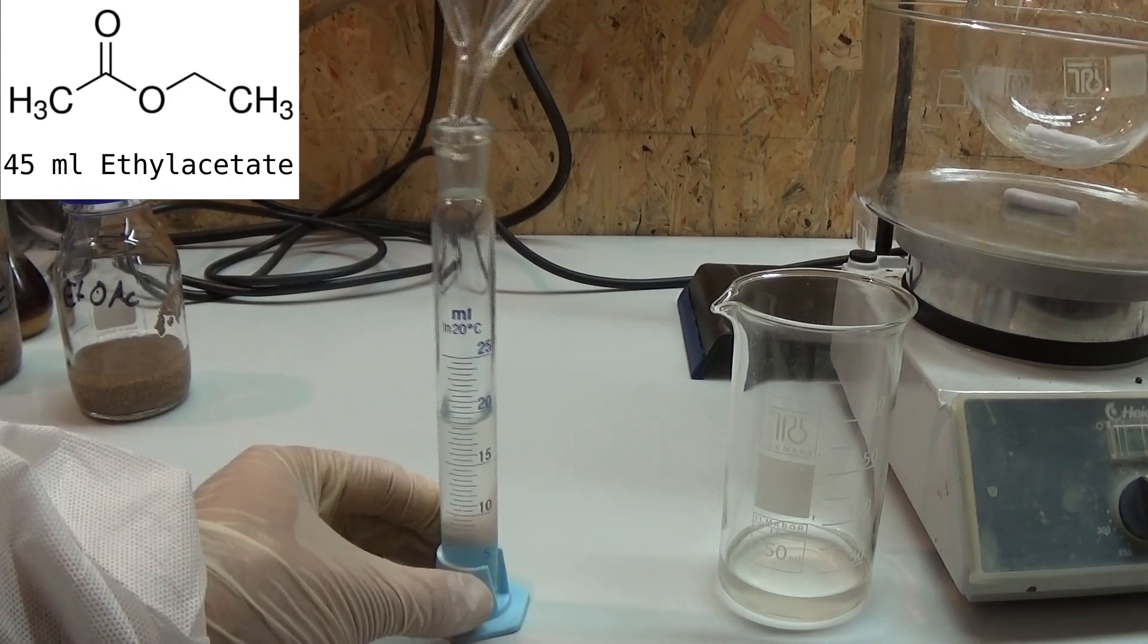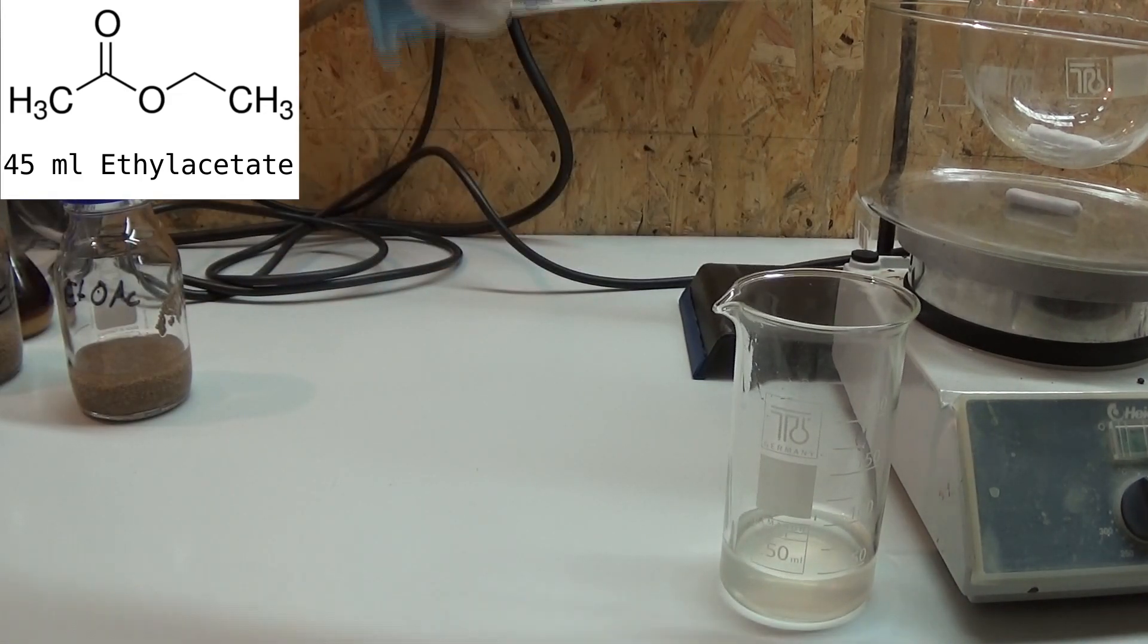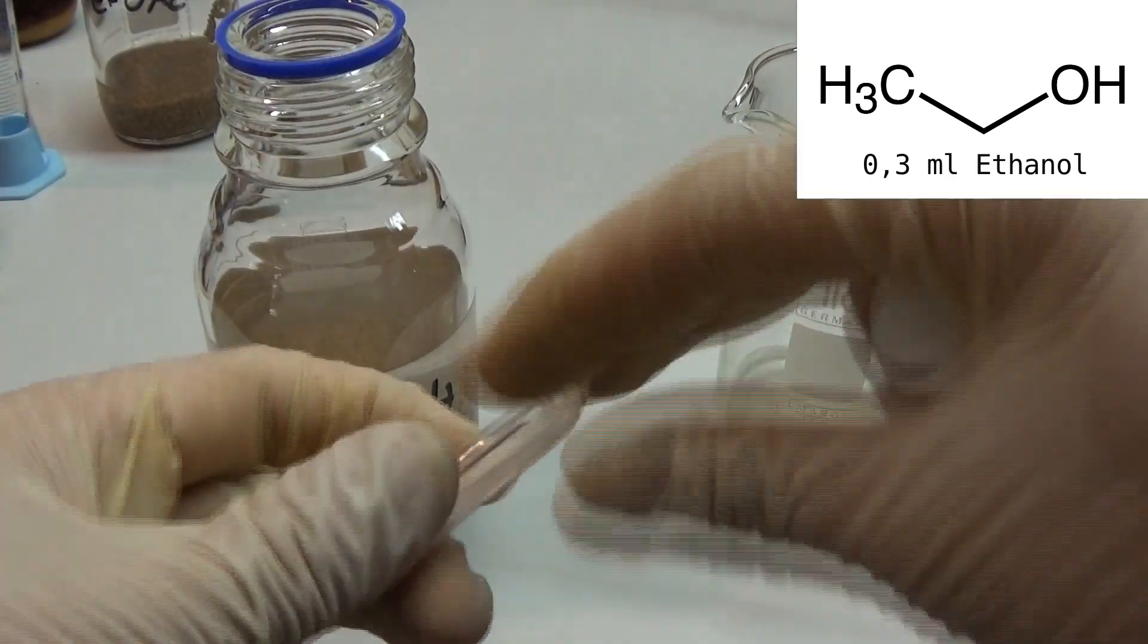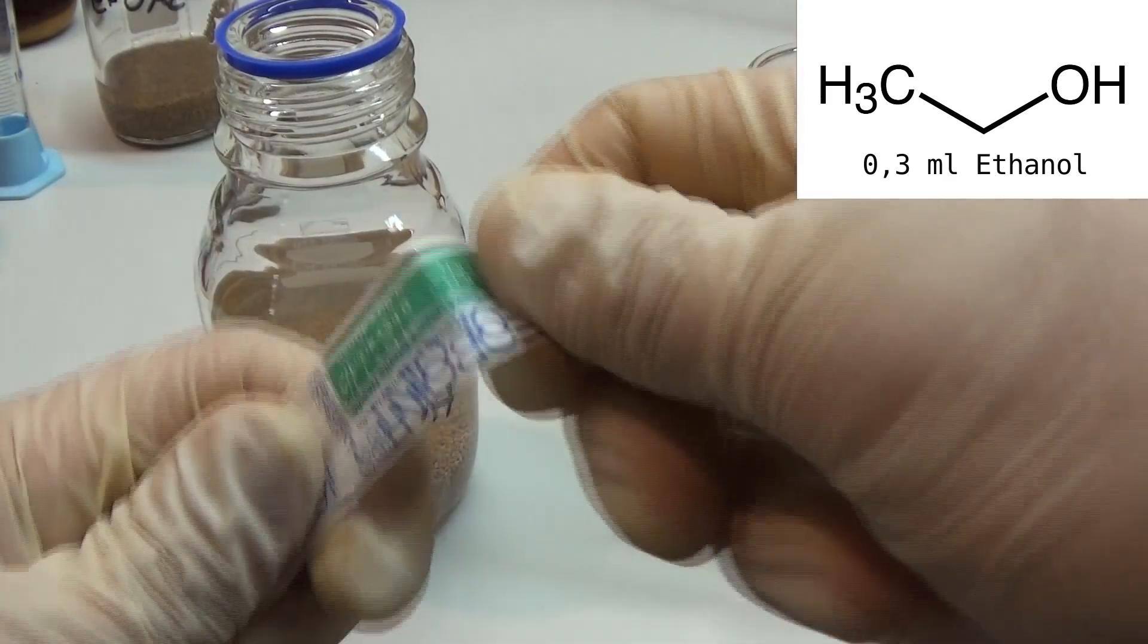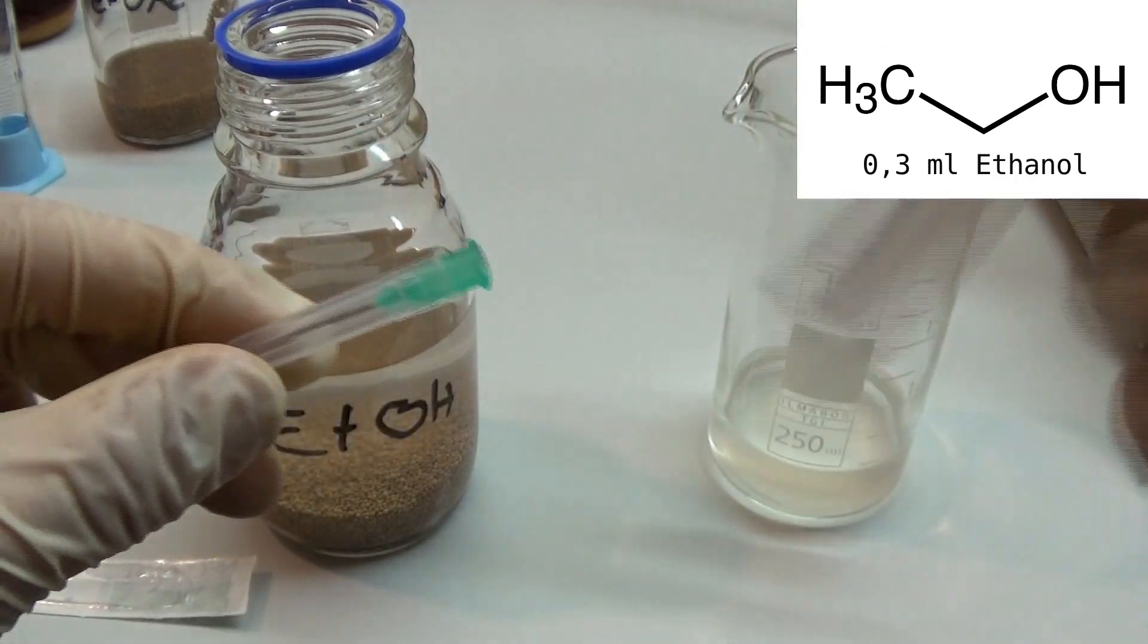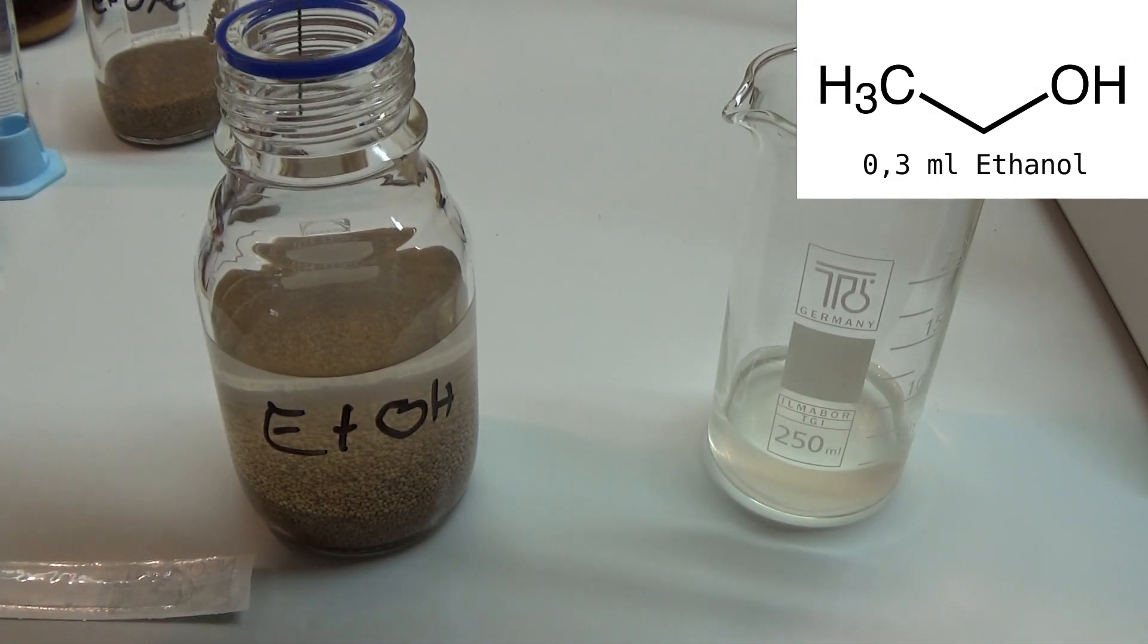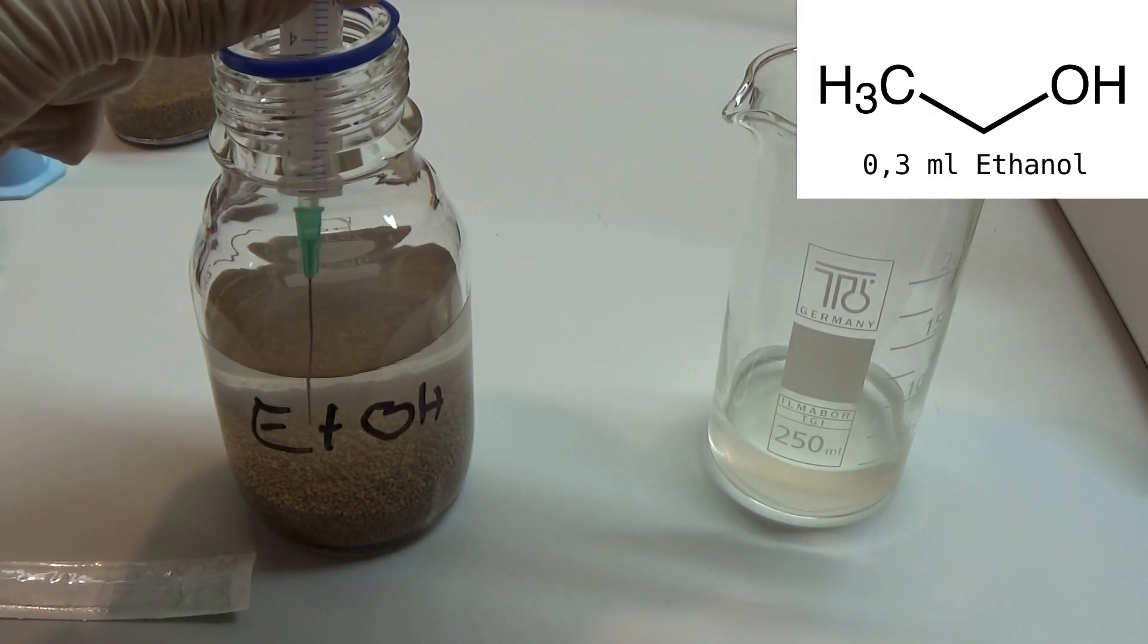Now for the second part of the catalyst: ethanol. The EtOH was also pre-dried using molecular sieves to ensure no water was present. We only need a small amount of ethanol so I measured 0.3 milliliters out and directly combined it with the ethyl acetate.